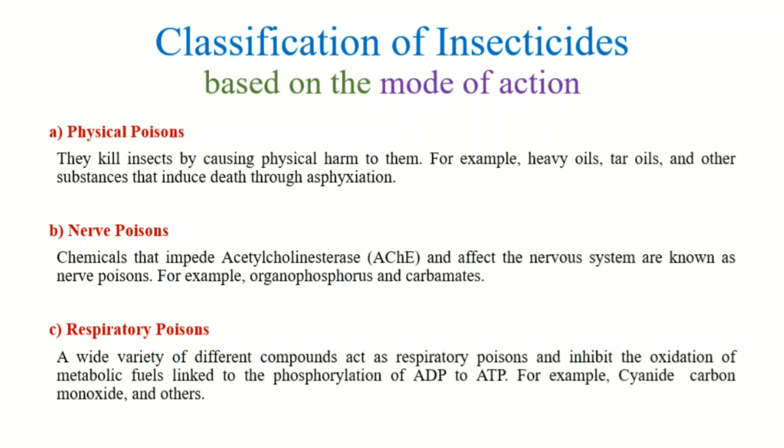There are physical poisons. These are poisons that physically cause harm resulting in the insect's death. Examples include heavy oils, tar oils, and other substances which cause asphyxiation — meaning oxygen deprivation — resulting in the insect's death.